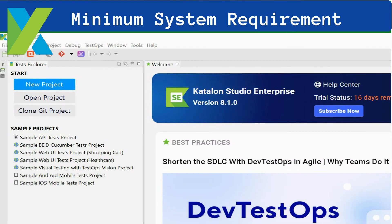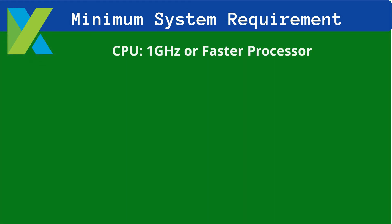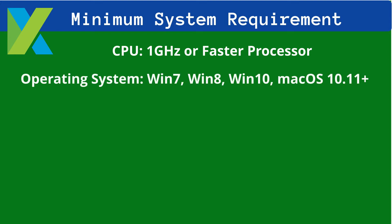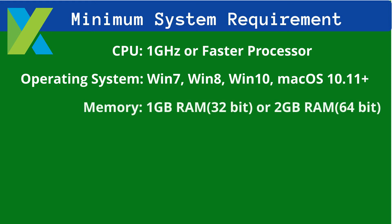The minimum system requirements to install and work with Katalon Studio on a user workstation are as follows. CPU: the minimum required frequency of the central processing unit is 1 GHz or faster. Operating system: Katalon is compatible with almost all the latest operating systems, such as Windows 7, Windows 8, and Windows 10, and macOS 10.11 or later. Memory: the minimum RAM required for a 32-bit OS is 1 GB and 2 GB for a 64-bit operating system. Hard drive: minimum available free space required is 1 GB.